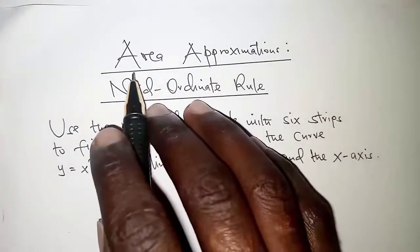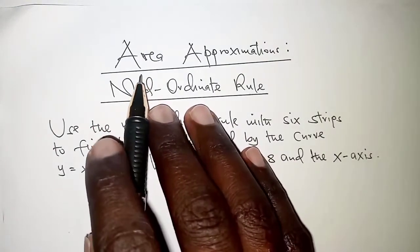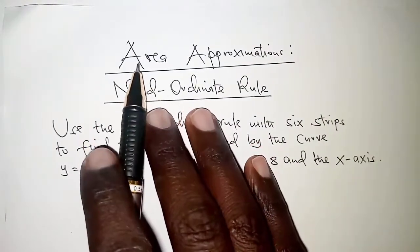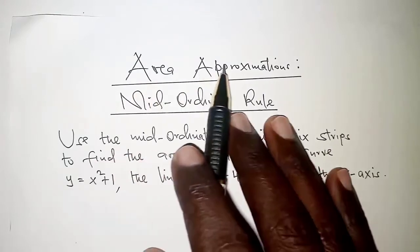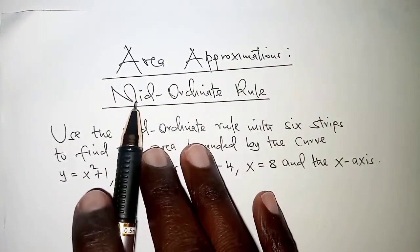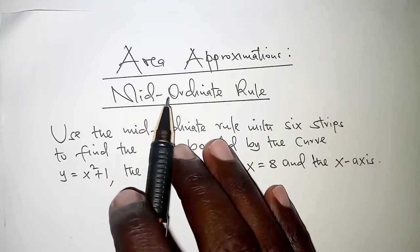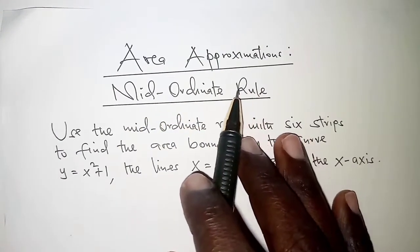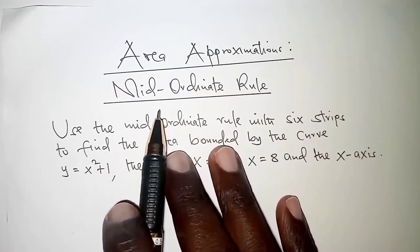Welcome to today's presentation. In today's presentation we are going to look at area approximation, and particularly we are going to learn how to use the mid-ordinate rule to estimate the area under a curve.